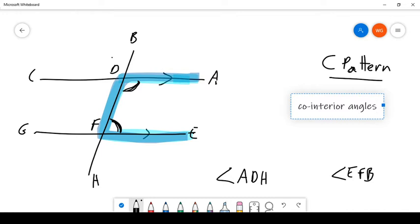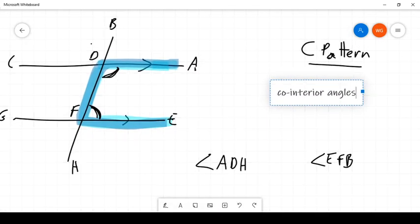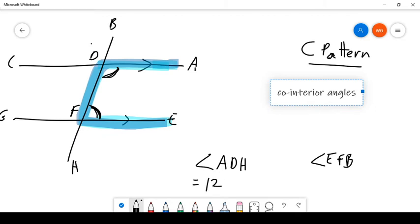I'll write that in at the end. So what that means is if I tell you that angle ADH is equal to, let's call it 120 degrees, well, guess what? Angle EFB, this angle in here, must be equal to 180 minus 120. Angle EFB must be equal to 60 degrees.